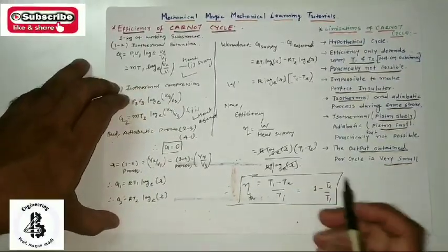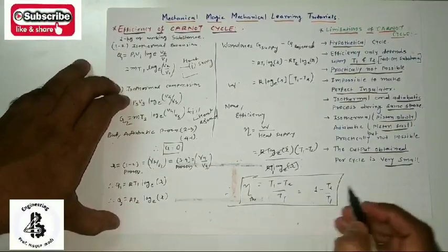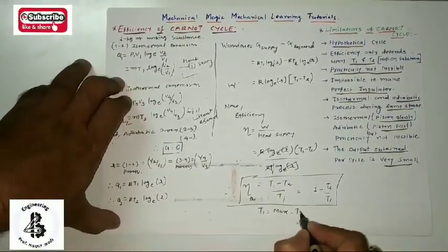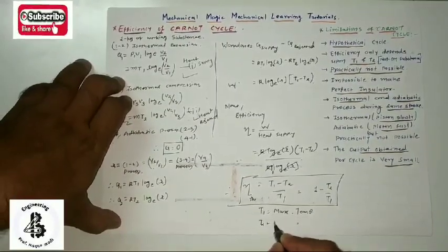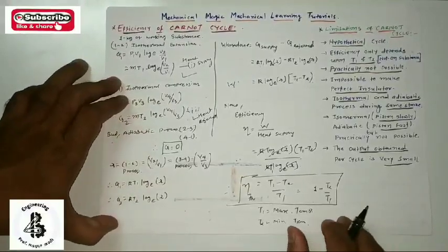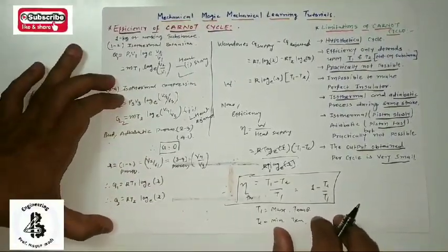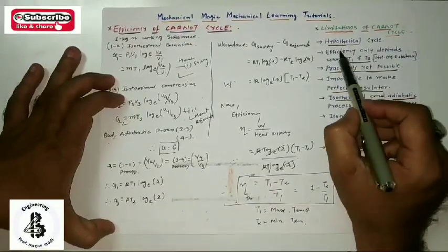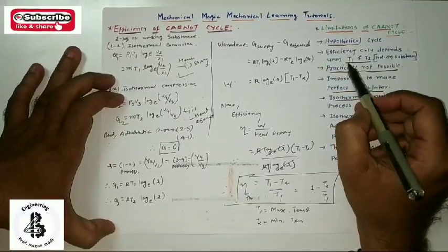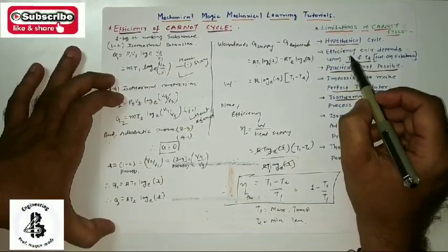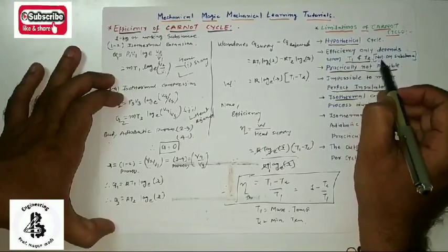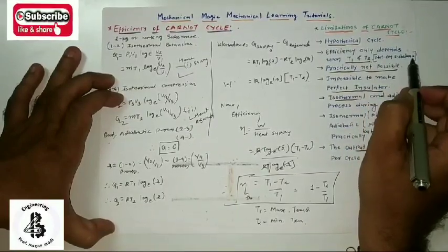Here T1 is the maximum temperature and T2 is the minimum temperature. Looking at the limitations of the Carnot cycle: it is called a hypothetical cycle and is practically not possible. Efficiency depends only on T1 and T2, not on which working substance is used.